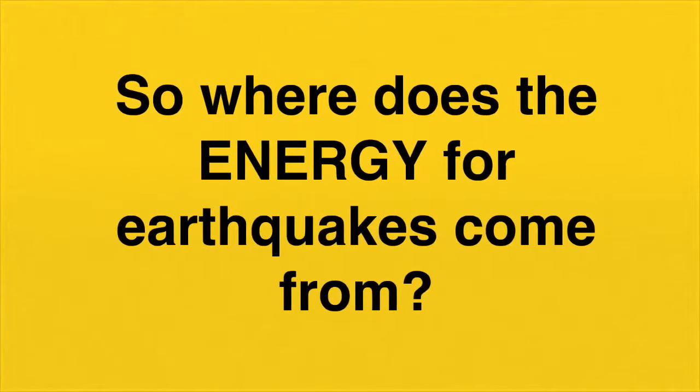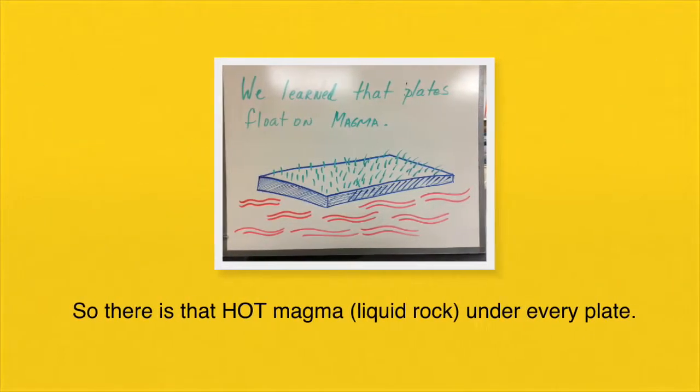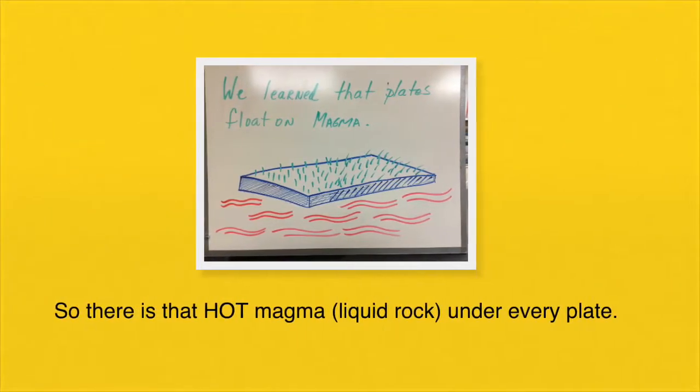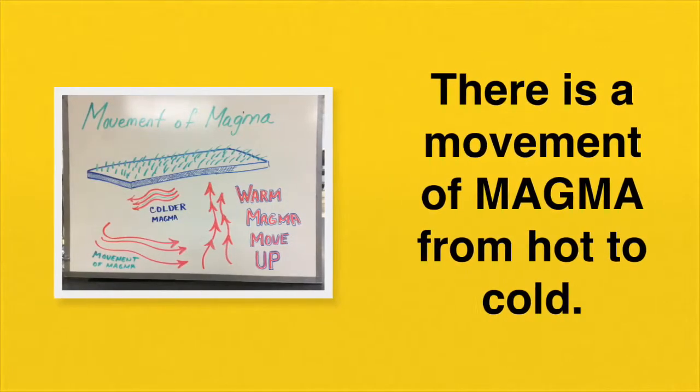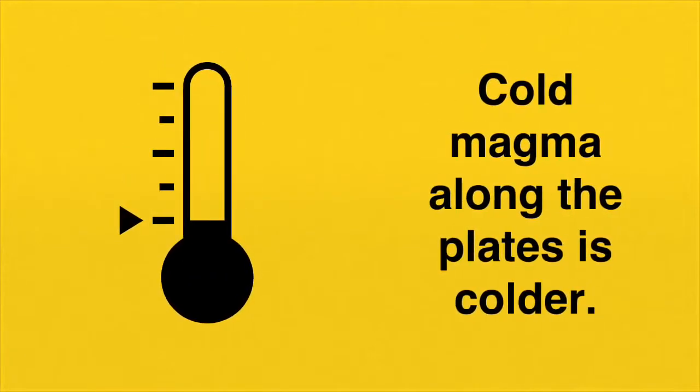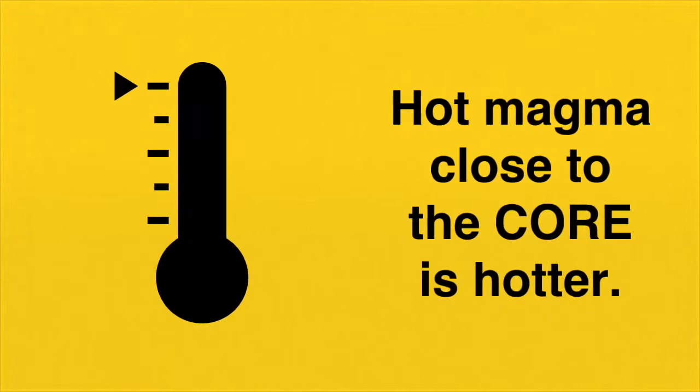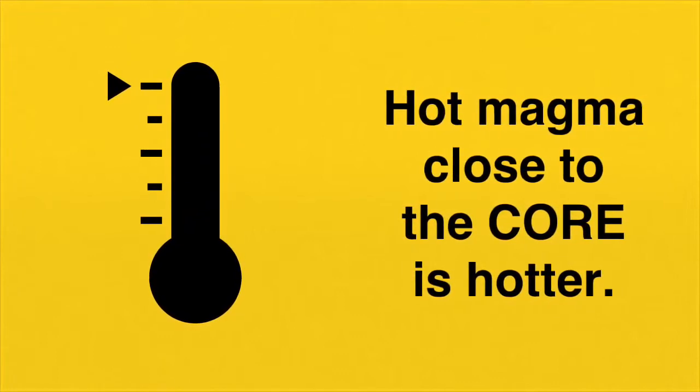So where does the energy for earthquakes come from? We have learned previously that there is hot magma, or liquid rock, under every plate. There is a movement of magma from hot to cold. Cold magma along the plate is colder. Hot magma, which is close to the core, is much hotter and wants to come to the surface because hot things rise.